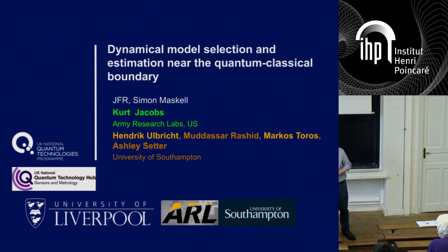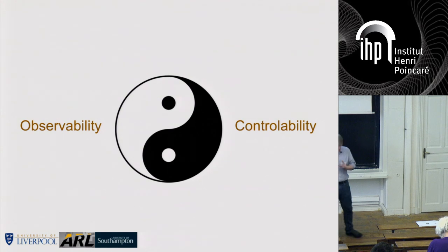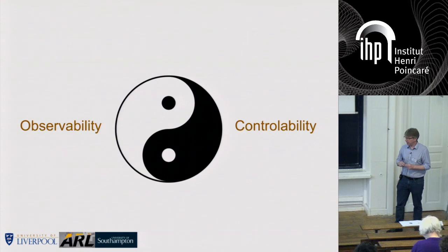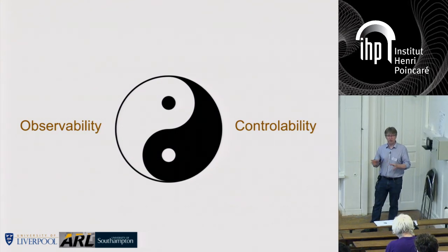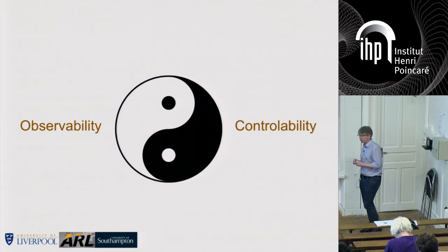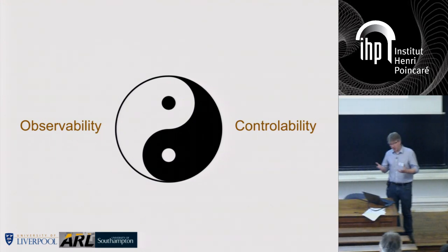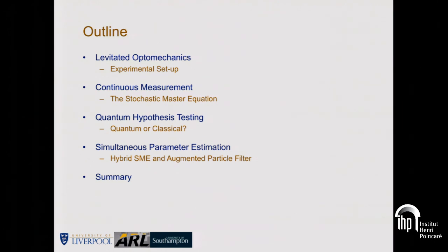So what do I want to talk about? First of all I need to apologise to Pierre. When I arrived yesterday, Pierre said he wanted this meeting to be mainly about the control side of things rather than estimation. The group at Southampton use a particular type of optomechanics, which Nicolai didn't go into, but I'll talk a little bit about. Then I'll talk about continuous measurements, which Marco Ginoni's already spoken about, and then go on to the meat of the talk, which is quantum hypothesis testing — how do you tell something is quantum mechanical as opposed to classical?